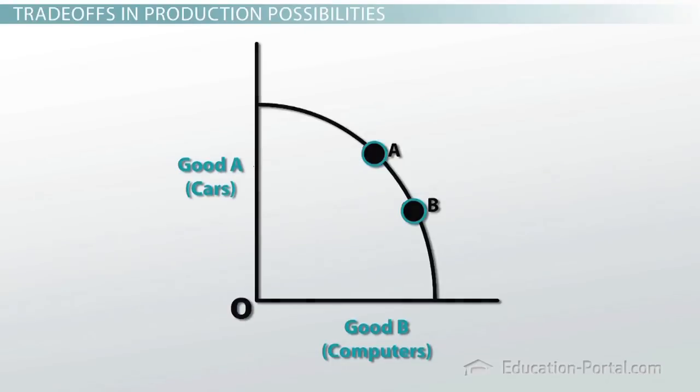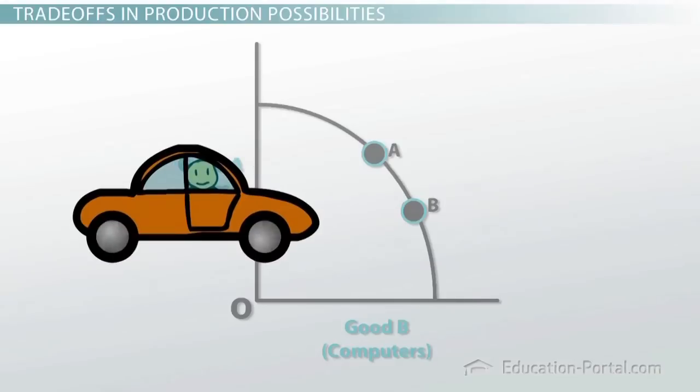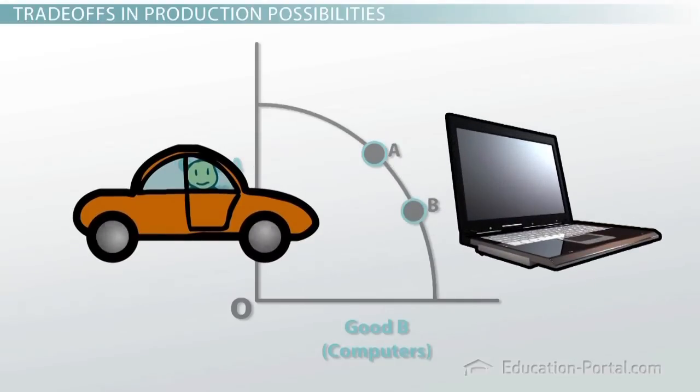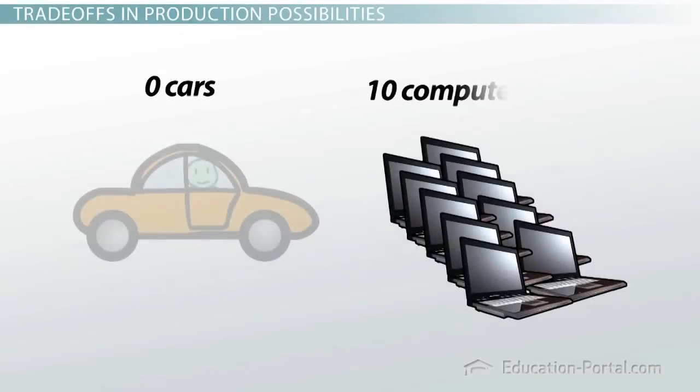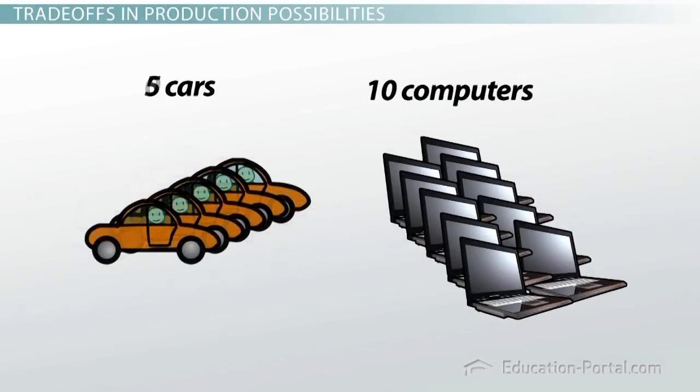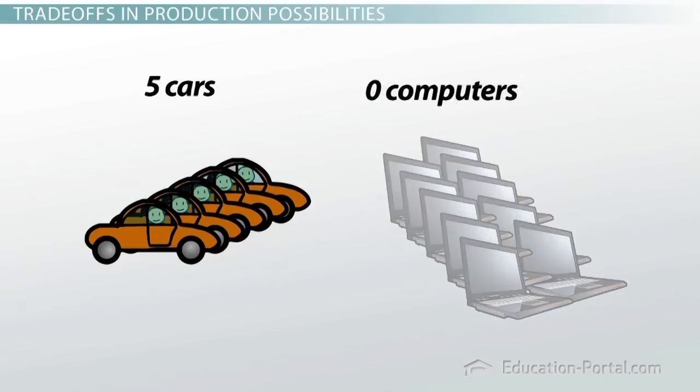For example, if our economy is producing cars and computers only, then we can choose to produce many different combinations of cars and computers. Since our resources are scarce, we can't produce as much as we want. But we can produce, for example, zero cars or ten computers. We could choose instead to produce five cars and zero computers. Why are these two numbers different? Because, in this example, these two activities have different production rates.